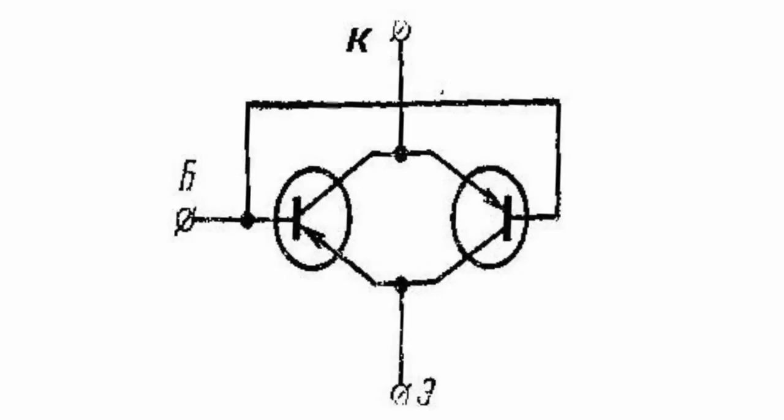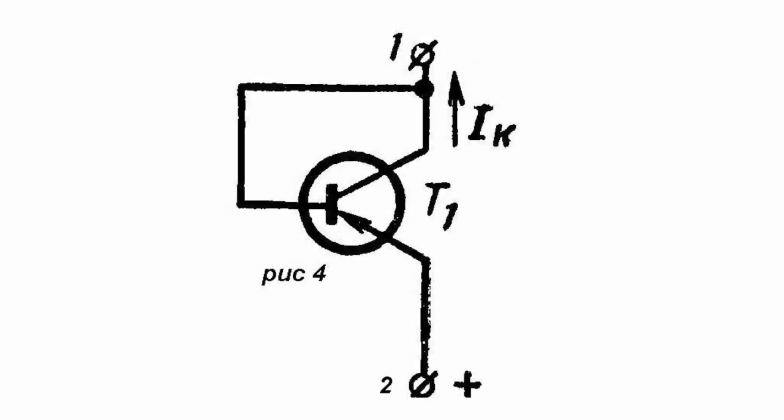It is easy to see that for such polarity of power and control voltage, the power transistor is virtually closed. Therefore, in this case, current in the direction from clamp 2 to clamp 1 will be conducted.